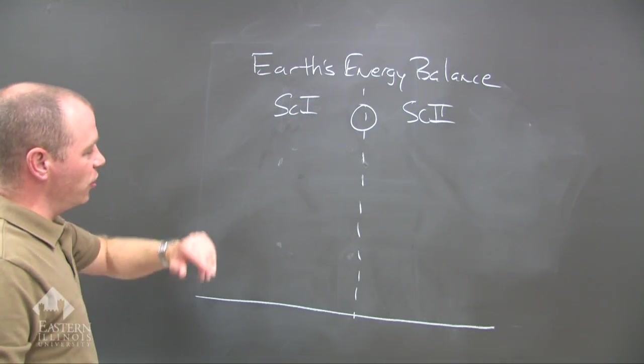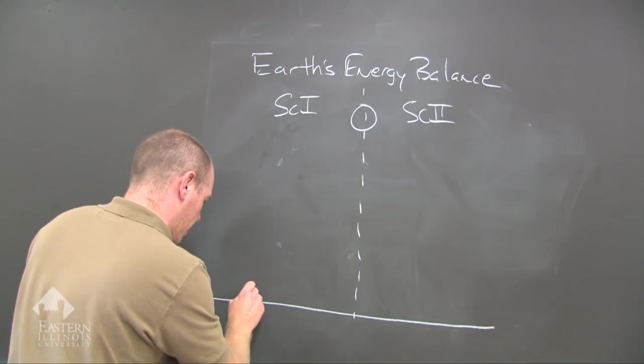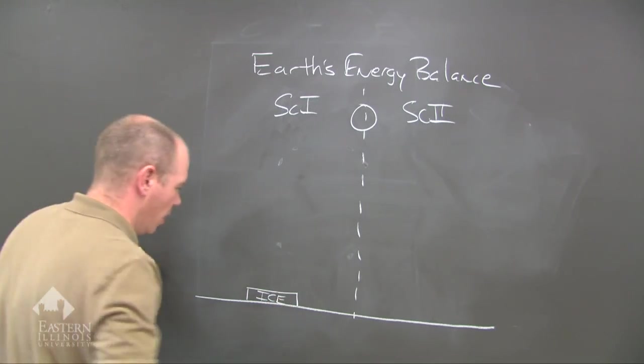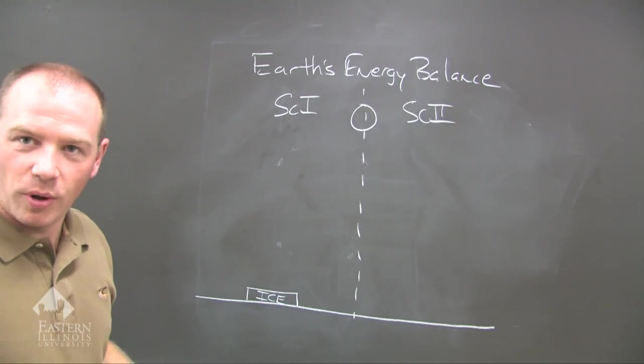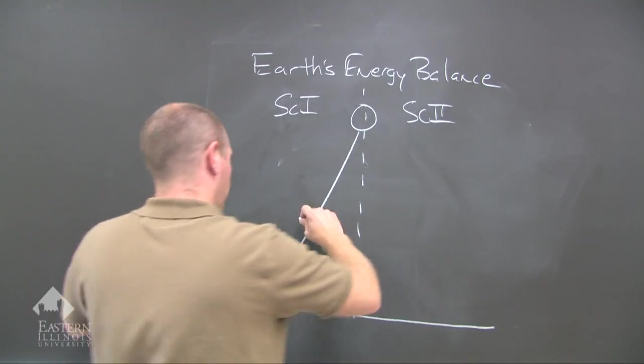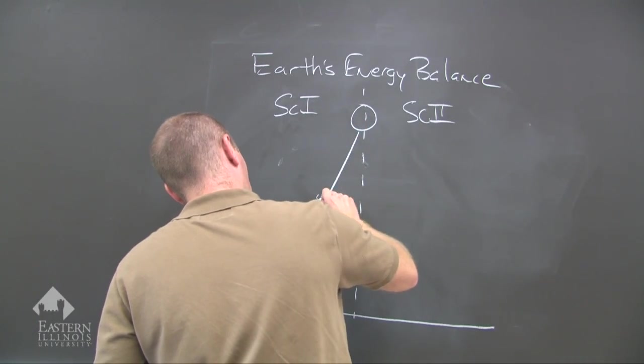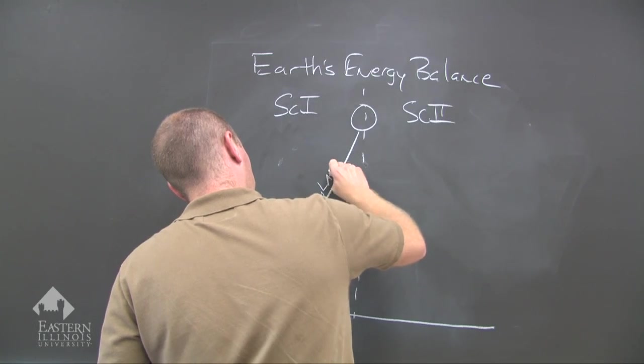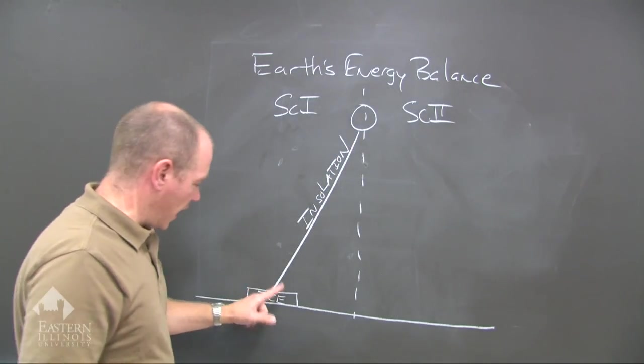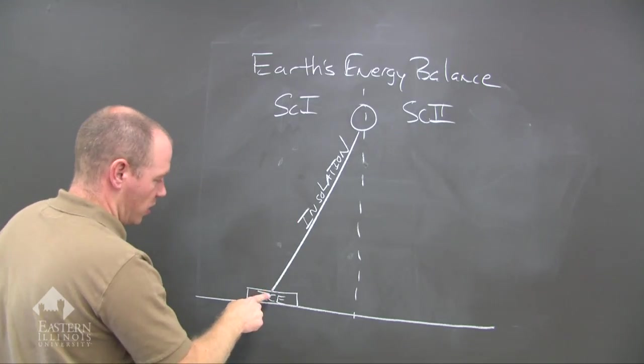We'll look at Scenario 1. Earth's energy balance Scenario 1. Let's pretend that we have a block of ice. We have a block of ice here which represents the polar regions. We have insolation and I'll go ahead and put this here, insolation.